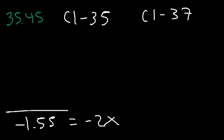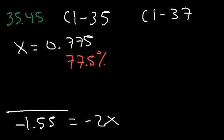So 35.45 minus 37, that's negative 1.55, and that's equal to negative 2X. So if we divide both sides by negative 2, negative 1.55 divided by negative 2, that's going to be 0.775. So we have 77.5% of chlorine-35. And 100 minus that number is 22.5% of chlorine-37.